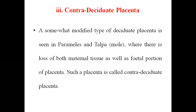The third type is contra-deciduate placenta. A modified type of deciduate placenta seen in parameles and talpa (mole), where there is loss of both maternal tissue as well as the fetal portion of the placenta. Not only the uterine wall but also fetal tissue is damaged. Such a placenta is called contra-deciduate placenta.